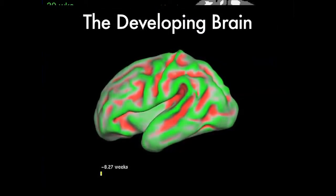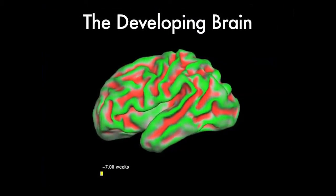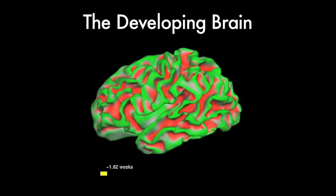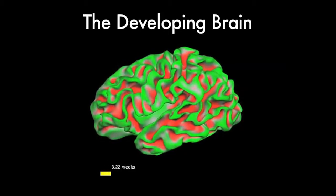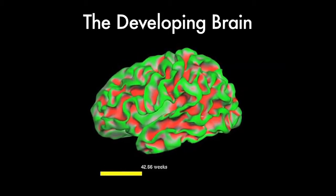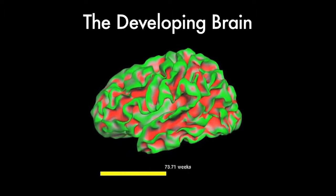Here we show how we can use the computer model to create a movie. We are just showing the folding and not the increase in brain size so you can see the spatial orchestration of the folding with age.